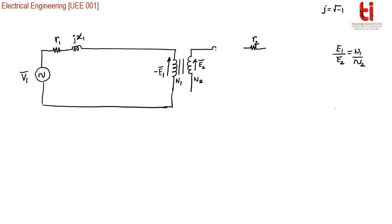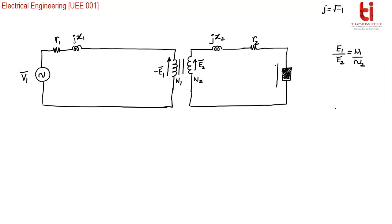The secondary winding voltage is shown as V2. The current flowing in the primary side winding is shown as capital I1, and the current flowing in the secondary side is shown as capital I2. So we have shown two non-idealities here: resistance of the winding and leakage of flux.